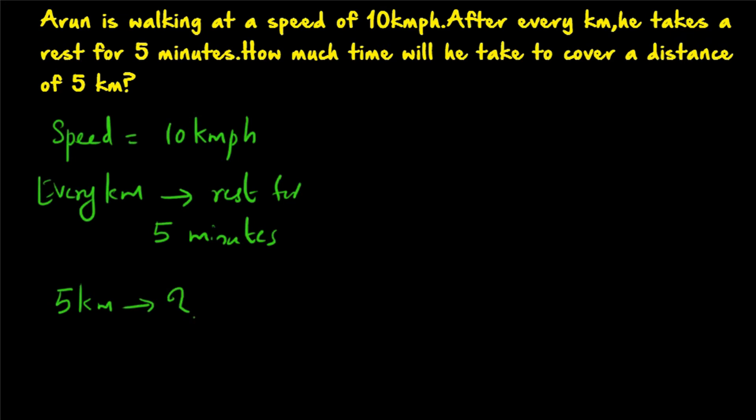He is walking at a speed of 10 km per hour, but he is not walking throughout. After every 1 km he will be taking a rest for 5 minutes. If that is the case, what will be the total time taken for Arun to cover a distance of 5 km? How many times does 1 km fit into 5 km? 4 times — so he has to take rest 4 times.